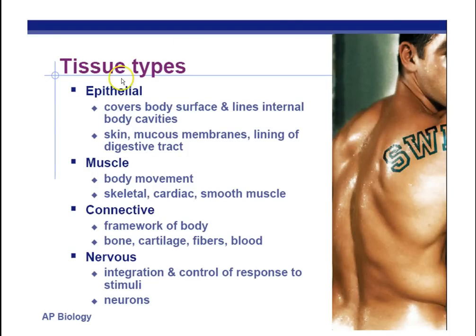You need to know all of this. The four tissue types that animals have are called epithelial, muscle, connective, and nervous.